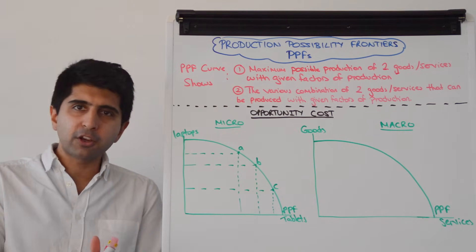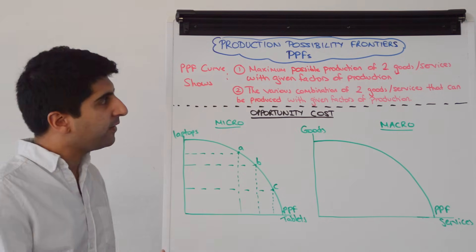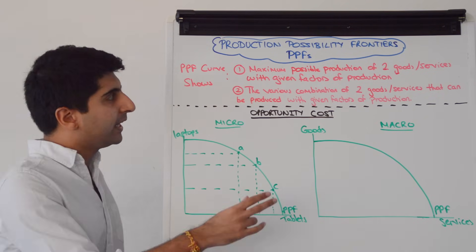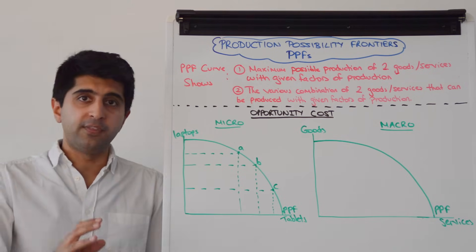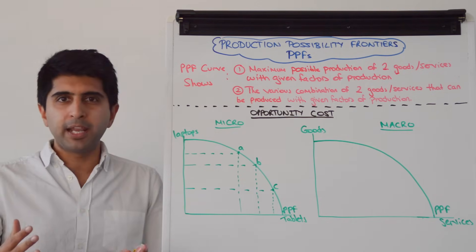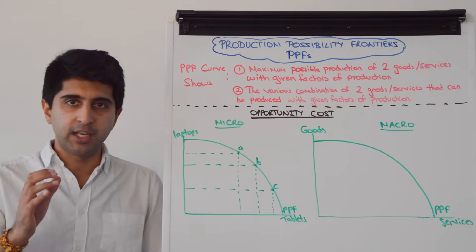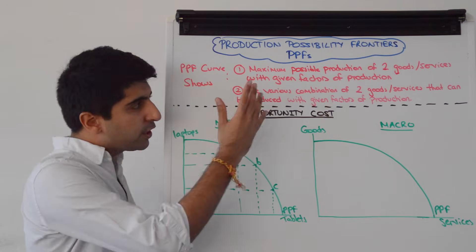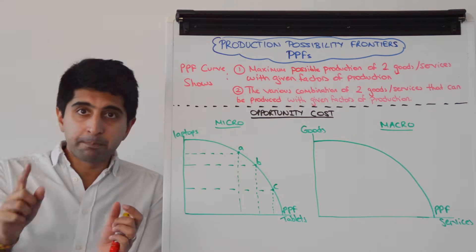If we make this macro, the curve tells us the maximum possible production of all goods and services that can be produced with the level of factors of production in the economy. And it also tells us the various combinations of all goods and services that can be produced with given factors of production in the economy. So that's what the curve actually represents — the actual boundary.